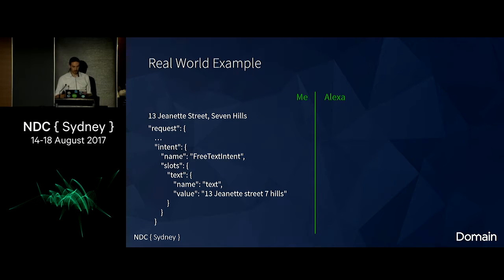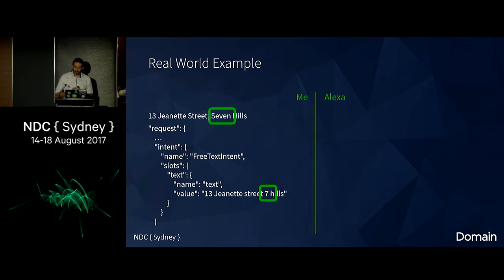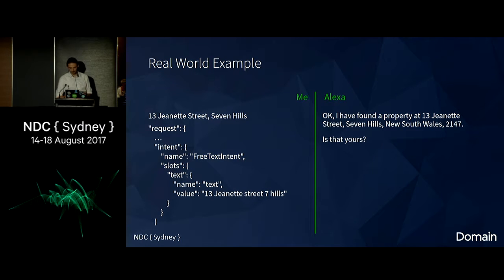I'm going to give it my address. This time it picks up the free text intent — the second intent we declared earlier. I do have a variable this time, which is my address exactly as I said. Or is it? Not quite, because it picked up that I said 'Seven Hills' and turned the word 'seven' into the number 7. So be careful about that when you do your processing behind the scenes with your API. 'I have found a property at 13 Jeanette Street, Seven Hills, New South Wales, 2147. Is that yours?'